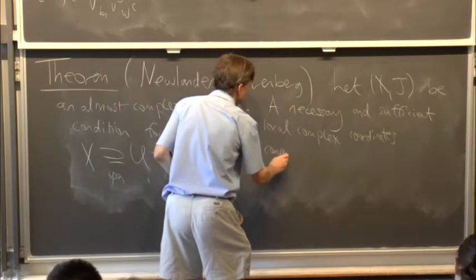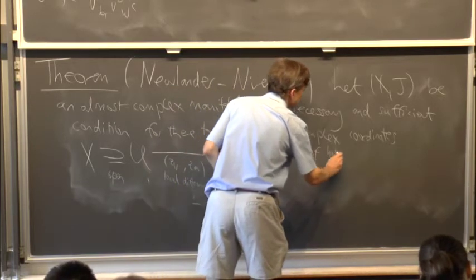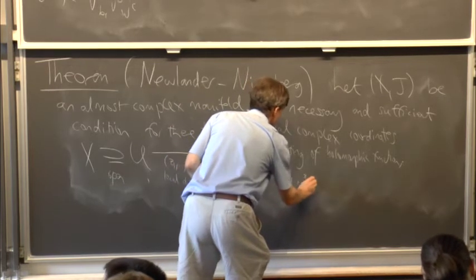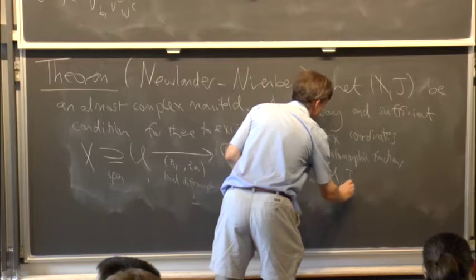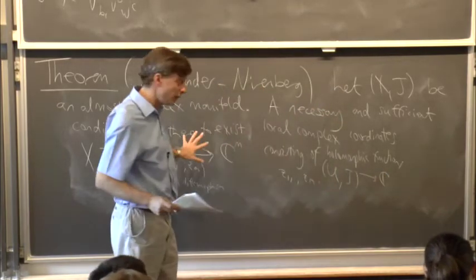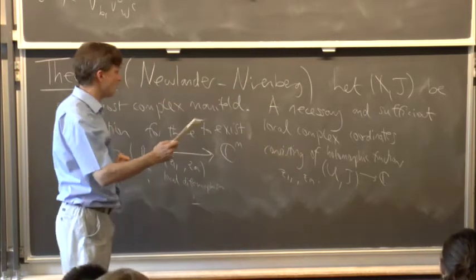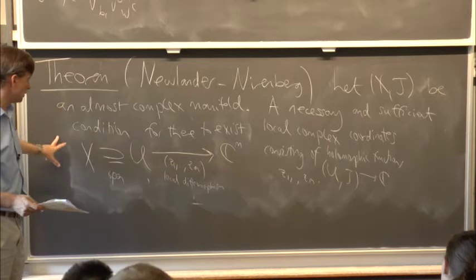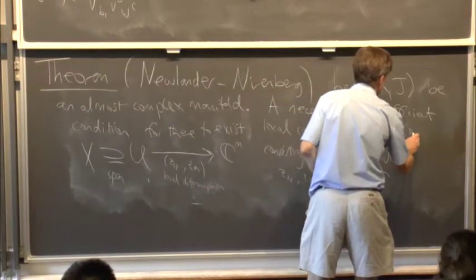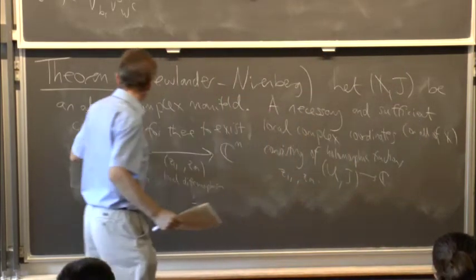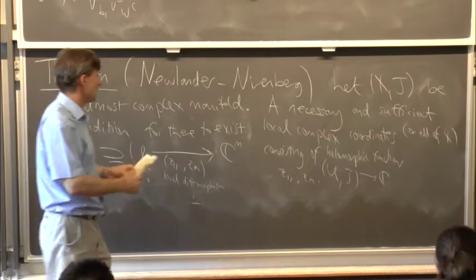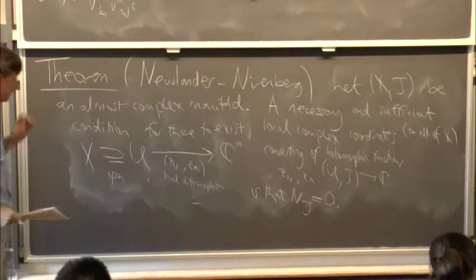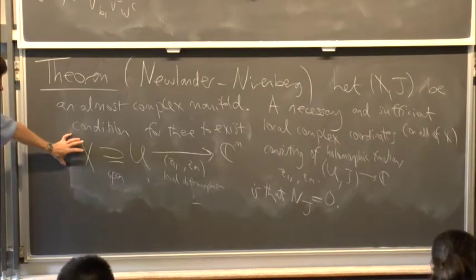These coordinate maps should consist of holomorphic functions — so each from (U, J) into C, using the definition of holomorphic function on an almost complex manifold. A necessary and sufficient condition for there to exist local holomorphic coordinates covering all of X by such open sets U is that the Nijenhuis tensor N_J is zero. If N_J is zero we can find local holomorphic coordinate patches; if not, we cannot.